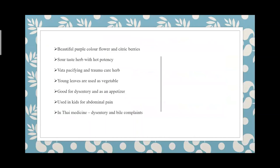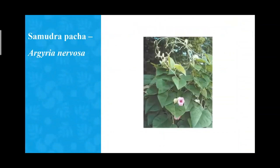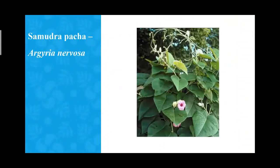Samudra pacha — Agriya nervosa, Bruddha dharu in Sanskrit — is a Rasayana and Vajikarana dravya. However, it is toxic in nature. The leaves are itchy and can cause irritation and allergic reactions on skin and internally. The seeds are hallucinogenic in nature.